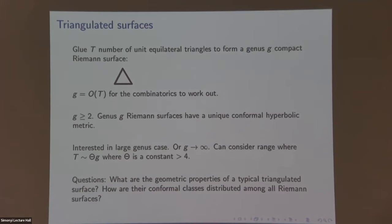Before moving on, I want to say something about motivation. In geometry it's natural to study triangulations, but this also appears in other contexts. Probabilists study various random models of triangulations, and this one is relevant there too. From the number theory perspective, the surfaces obtained this way are exactly the Riemann surfaces defined over Q-bar, the algebraic numbers. So if instead of triangulations you want to think about Belyi maps, or the combinatorial data associated to Belyi maps, you can do that for the rest of the talk and replace t, the number of triangles, by the degree of the Belyi map.